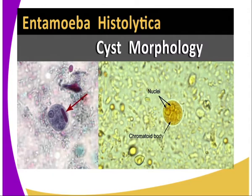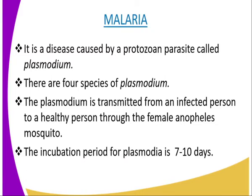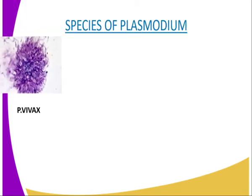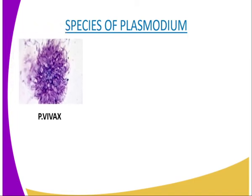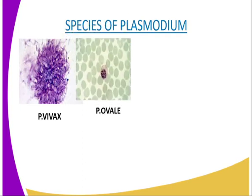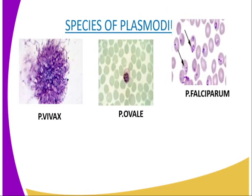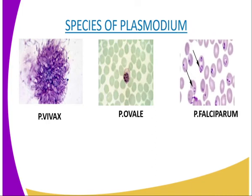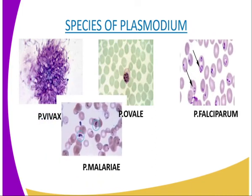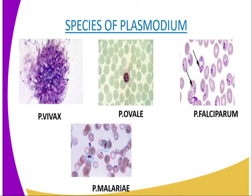The next protozoan disease we are going to look at is malaria. Malaria is caused by a protozoan parasite called Plasmodium, and there are four different species of Plasmodium: P. vivax, P. ovale, P. falciparum, and P. malariae.